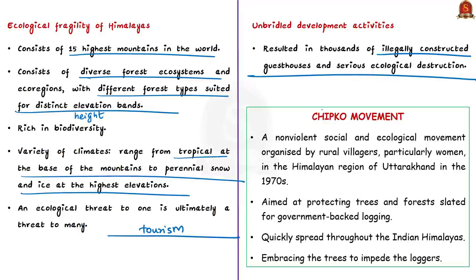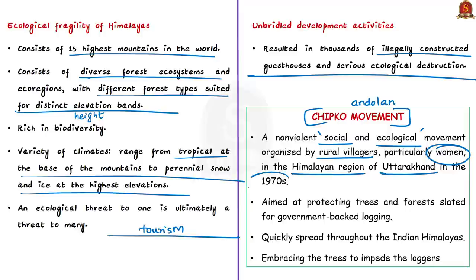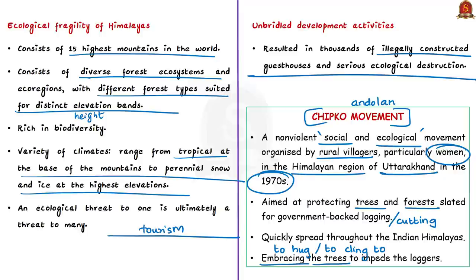The author reminds us of the Chipko movement that happened in Uttarakhand. The Chipko Andolan was a non-violent social and ecological movement organized by rural villages, particularly women, in the Himalayan region of Uttarakhand in the 1970s. It aimed at protecting trees and forests slated for government-backed logging and quickly spread throughout the Indian Himalayas. The word 'Chipko' in Hindi means to hug or to cling to, reflecting the demonstrators' primary tactic of embracing the trees so as to impede those who came for cutting them.